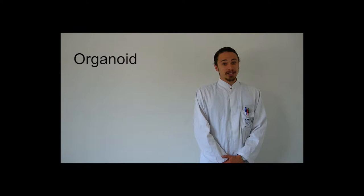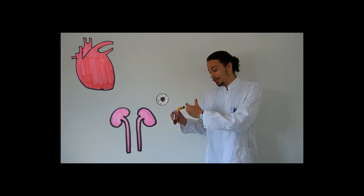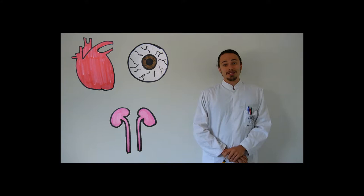Organoid technology is a new research field that works on creating simple, miniature versions of organs derived from stem cells. Will we be able to grow whole organs like hearts, kidneys, or even eyes with this new biotechnology? To delve into the world of organoids, we first have to find out where they come from.